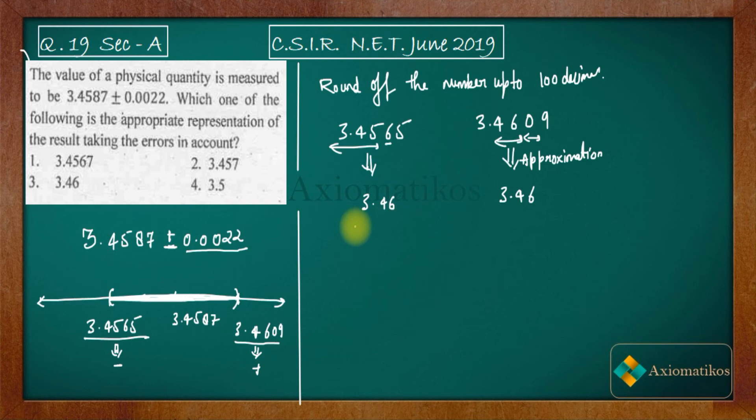So what is the rule? The rule is very simple. Suppose you want to round off up to hundredth digit. The number which is written after the hundredth digit, if it is less than 5, then you have to keep it as it is. And if it is greater than 5, like this one which is 6, that means you have to add 1 to the previous number.